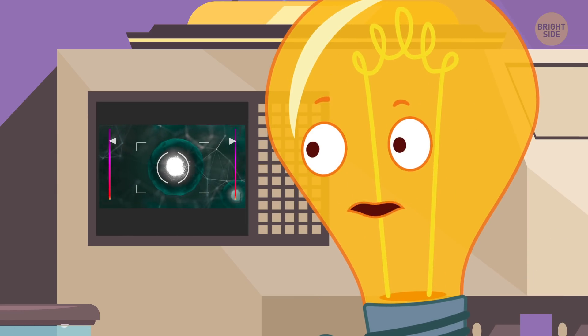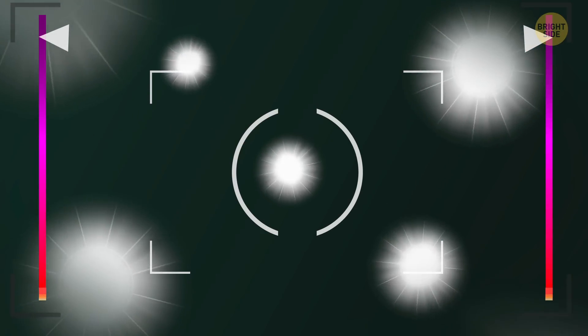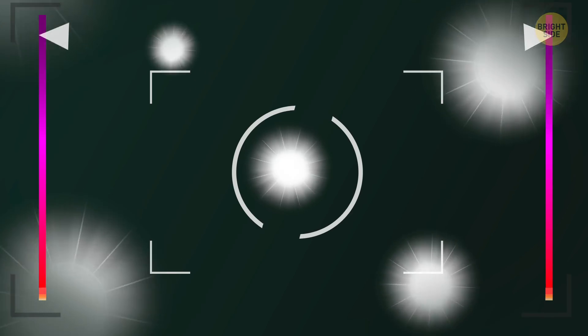And even that's not the end of it, and there are particles even smaller than top quarks. One of them is a neutrino, measuring about one yoctometer.